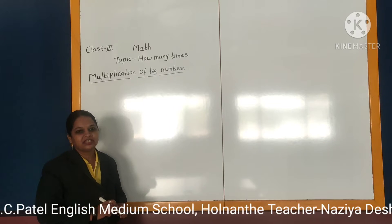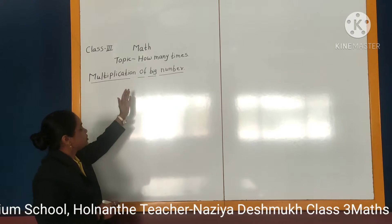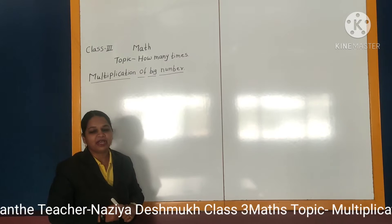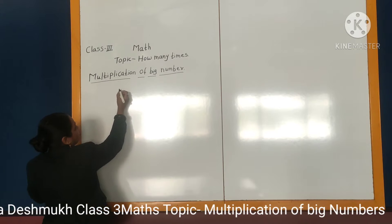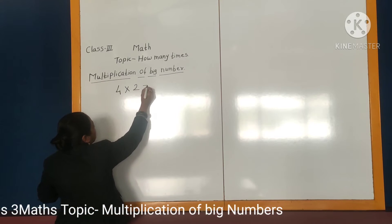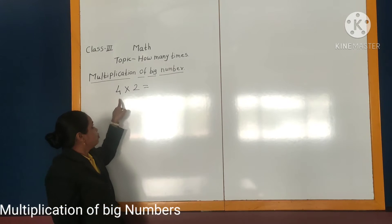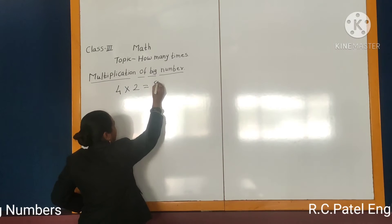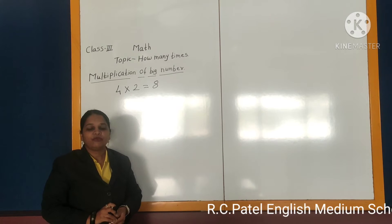Today we are going to learn a new topic from the lesson 'How Many Times' for Class 3 Maths. The topic we are learning today is multiplication of big numbers. You know how to multiply single digit numbers — it is very easy. For example, 4 multiplied by 2 — you can easily say the answer will be 8. But how can we do the multiplication of big numbers?